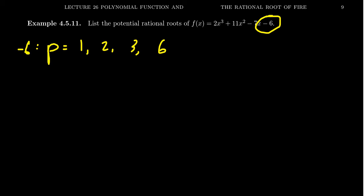But we could also take negatives — it doesn't have to be positive. So we could get plus or minus 1, plus or minus 2, plus or minus 3, and plus or minus 6. Those are all the possible divisors of −6. On the other hand, the leading coefficient is 2, so the possible divisors of 2 are going to be plus or minus 1 and plus or minus 2. Since 2 is a prime number, there's not a lot of divisors there.